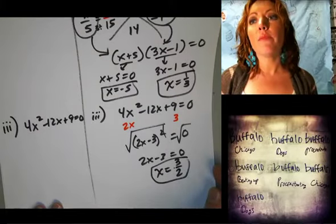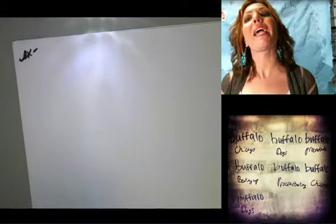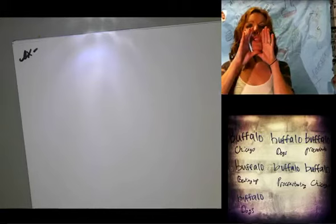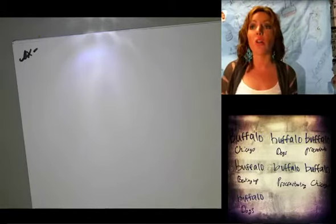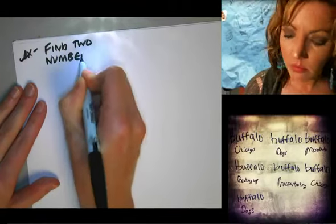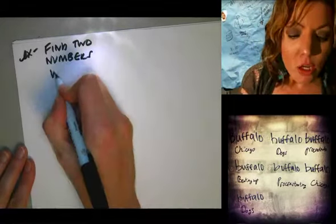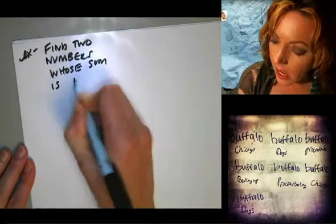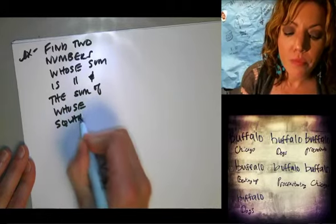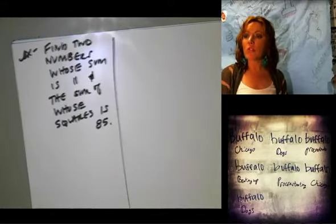Do you guys want to do any more of these? I can't remember if there are word problems or not, but would you like to go through one of them? Everybody see what the problem is first. 1 through 11 all, and then 21 through 25 all. Let's say find two numbers. Let's do one. Find two numbers whose sum is 11, and the sum of whose squares is 85.